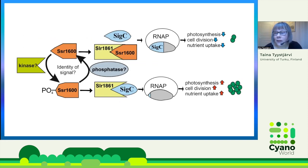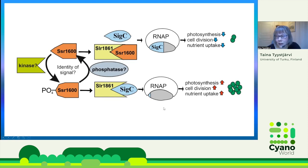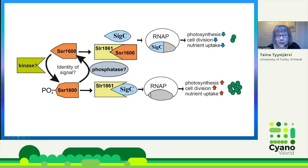This is how we think the system functions. We do not know what the signal from high or low CO2 is. But in high CO2 conditions, an unknown kinase phosphorylates SSR1600, and because of that, SLR1861 interacts with SigC, which is then not recruited by the RNA polymerase core — other sigma factors are instead recruited, photosynthetic, cell division, and nutrient genes are actively expressed, and cells grow fast. When cells are put to low CO2 conditions, most probably a phosphatase is activated — we do not know yet which phosphatase — and it dephosphorylates SSR1600, which then interacts with SLR1861, releases SigC to be recruited by the RNA polymerase core, and these growth genes are downregulated.